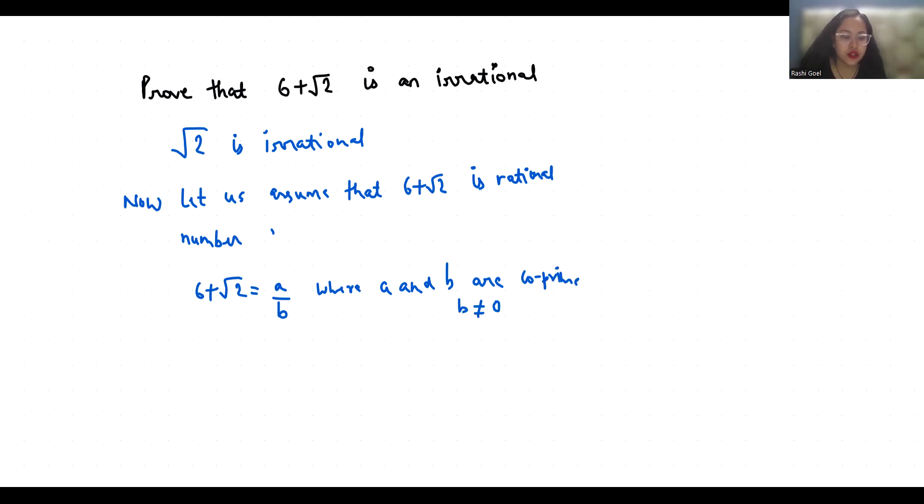So root 2 equals, we can write a by b minus 6. This positive 6 goes to the other side as negative 6. So root 2 equals, the LCM is b, a minus 6b. Now a and b are integers.